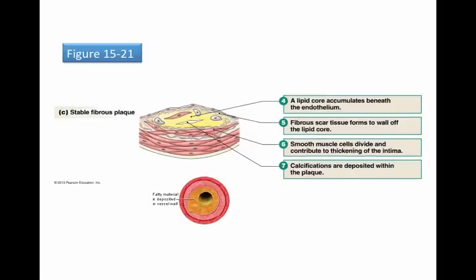We start developing a problem because if we have a lot of this circulating low-density lipoprotein with cholesterol, we start accumulating a lot of this stuff under the endothelium. The smooth muscle cells begin to divide even more because this bulge into the center of the lumen creates an area of locally higher pressure, which becomes a risk for bursting that blood vessel. So to reinforce the blood vessel, these smooth muscle cells proliferate. We start to get calcification inside this lipid core, and at this point it's what we call a stable plaque.